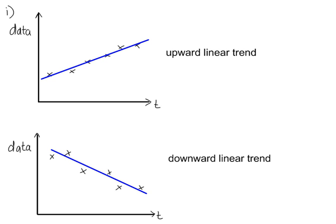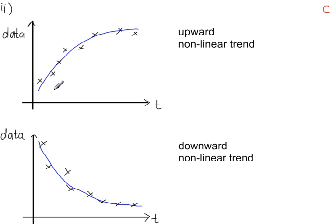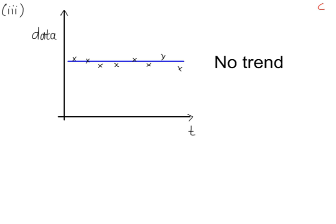Trend and graphs. This graph shows an upward linear trend. This one shows a downward linear trend. This graph shows a downward non-linear trend. This graph shows no trend at all.